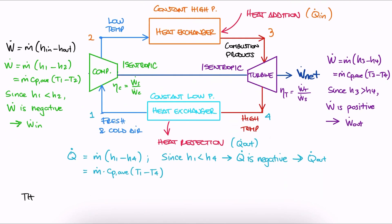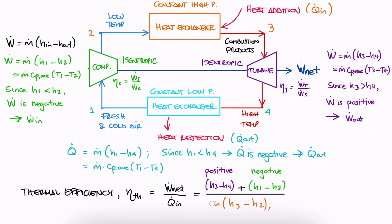We used the general definition of efficiency to write h3 minus h4 plus h1 minus h2 over h3 minus h2. This equation is not for you to memorize as the general equation for thermal efficiency for a Brayton cycle.